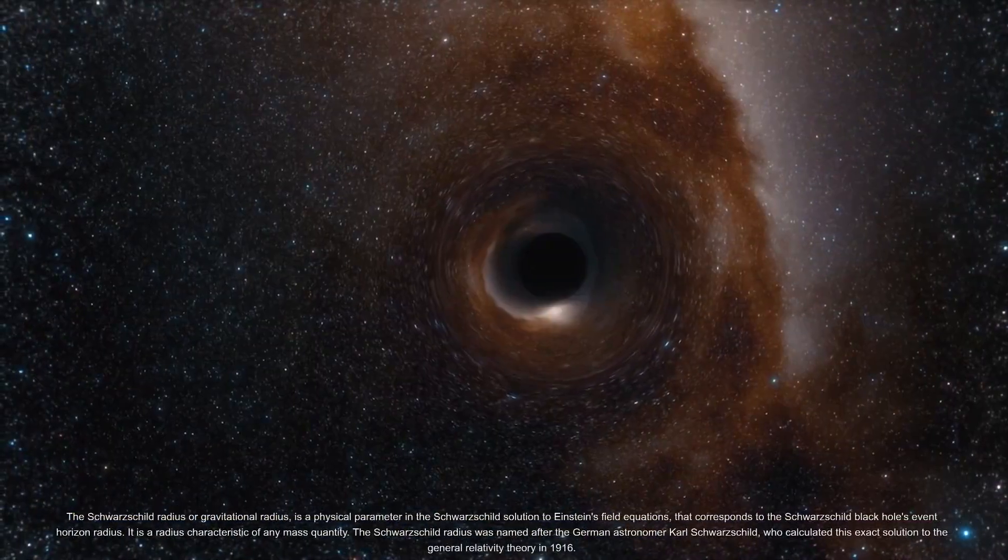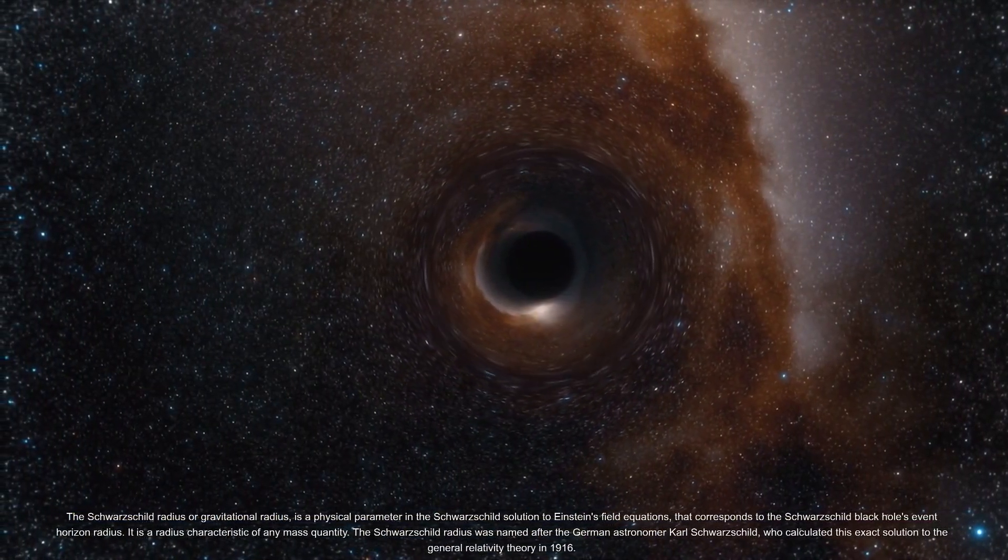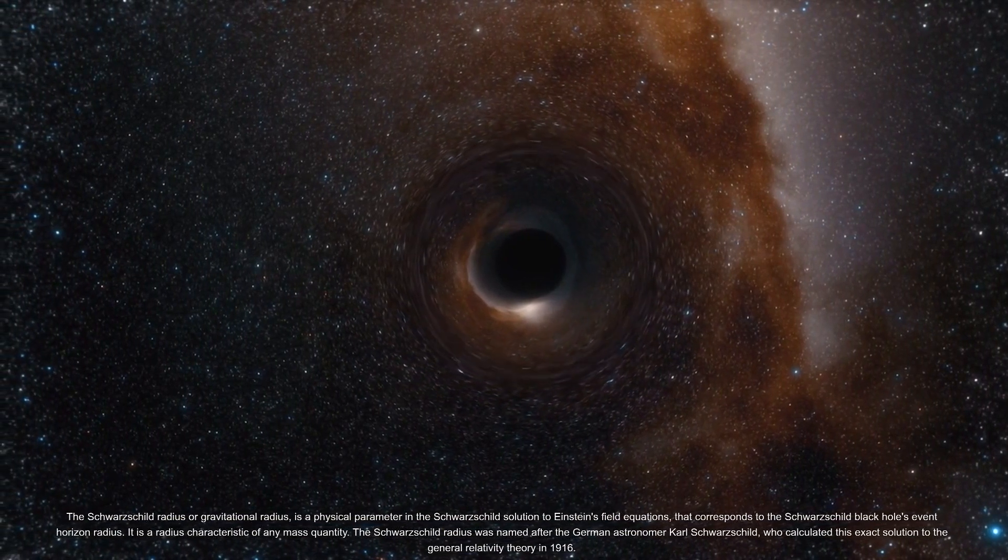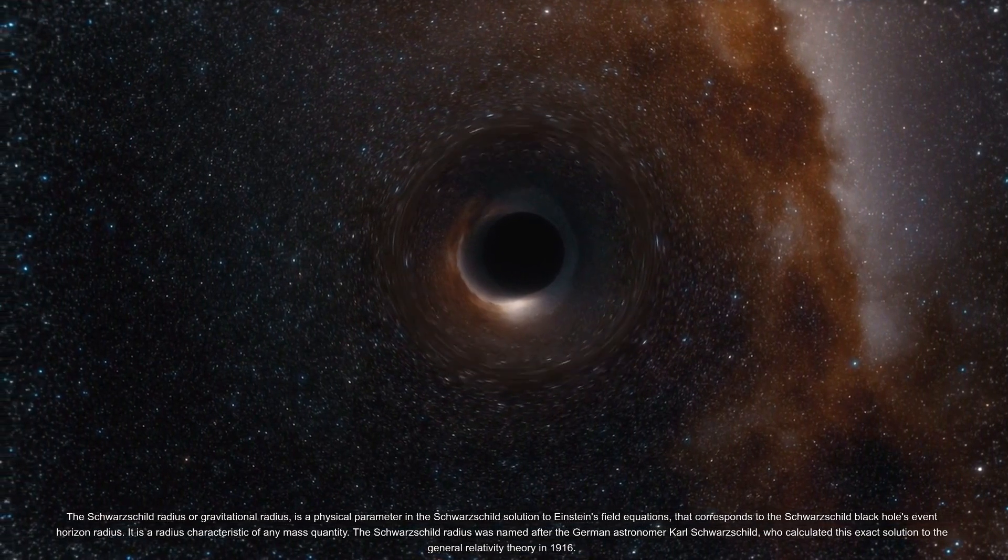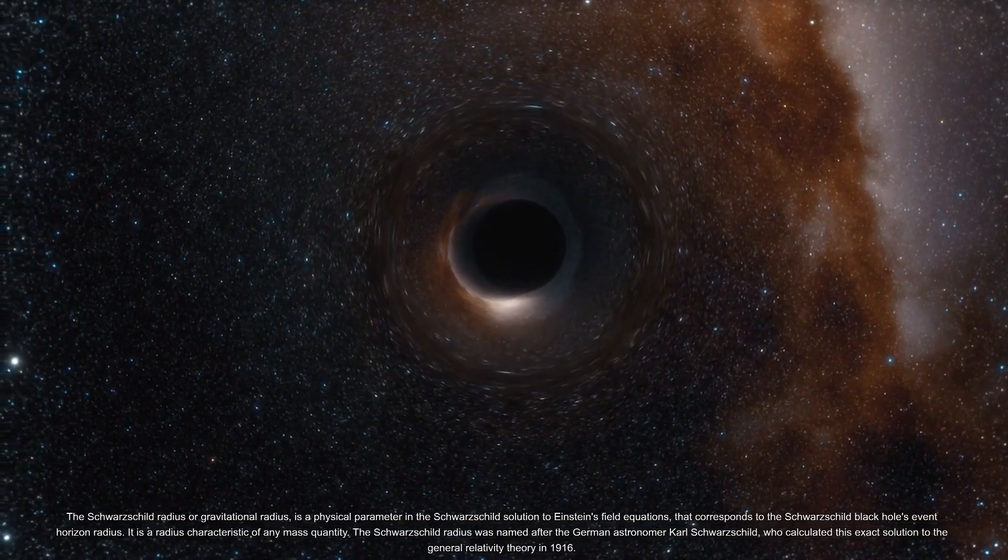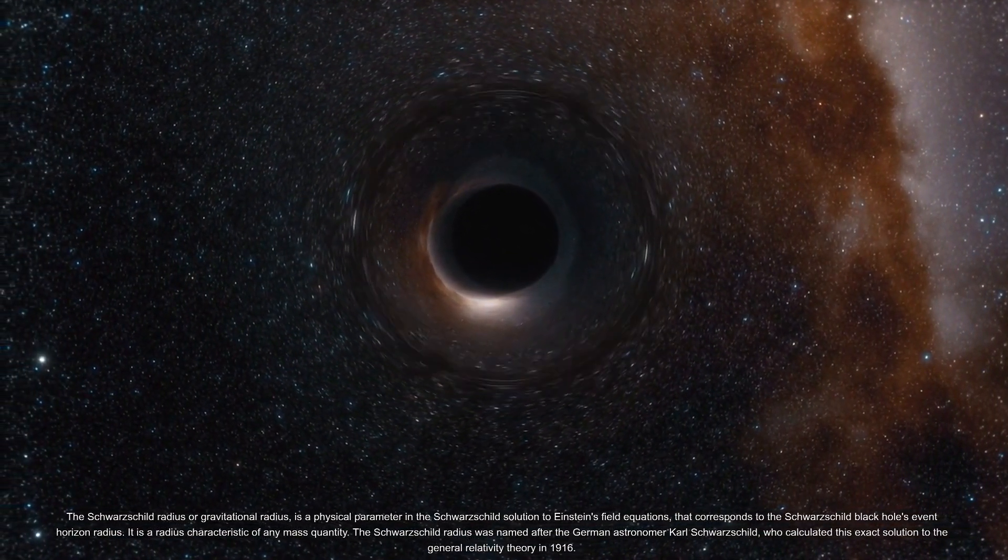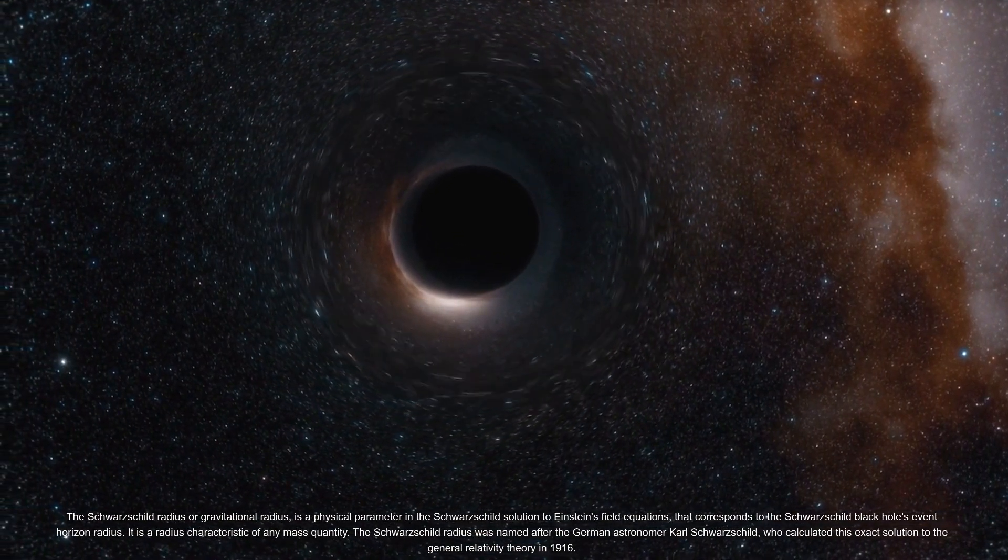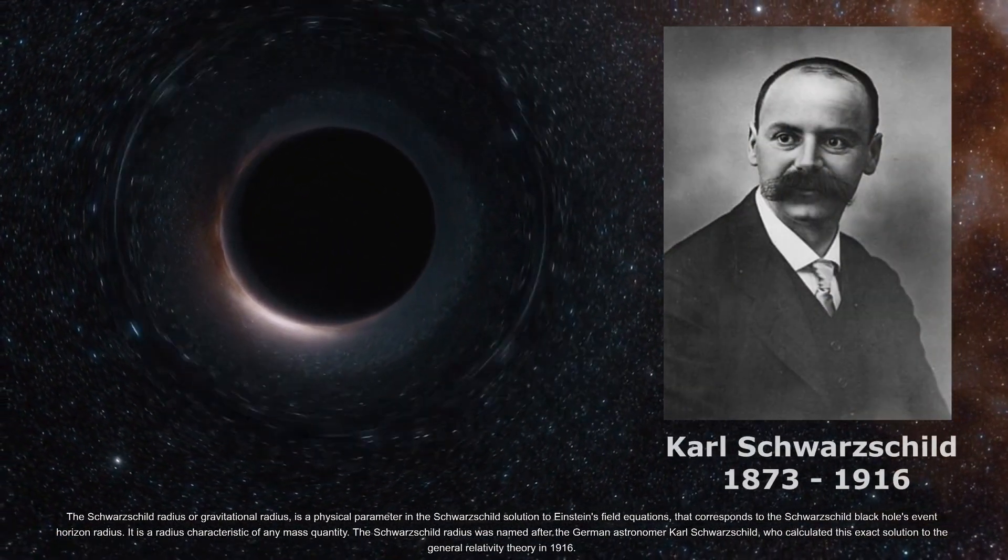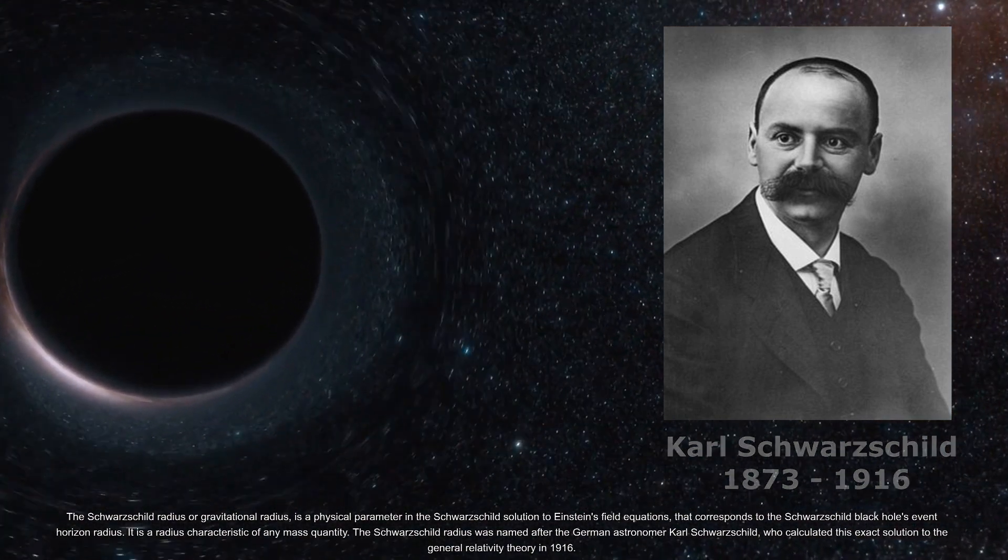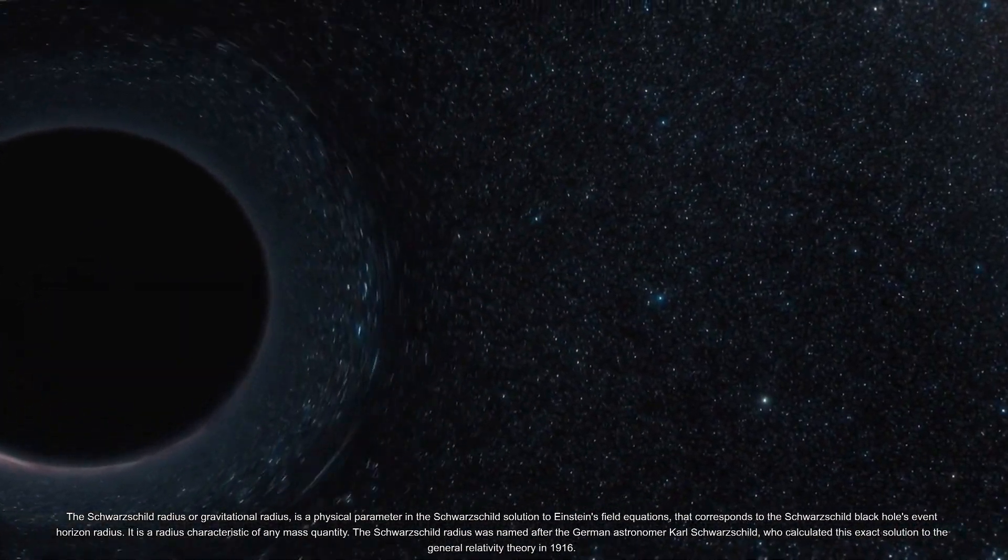The Schwarzschild radius, or gravitational radius, is a physical parameter in the Schwarzschild solution to Einstein's field equations that corresponds to the Schwarzschild black hole's event horizon radius. It is a radius characteristic of any mass quantity. The Schwarzschild radius was named after the German astronomer Karl Schwarzschild, who calculated this exact solution to the general relativity theory in 1916.